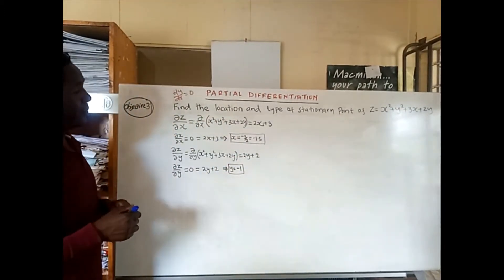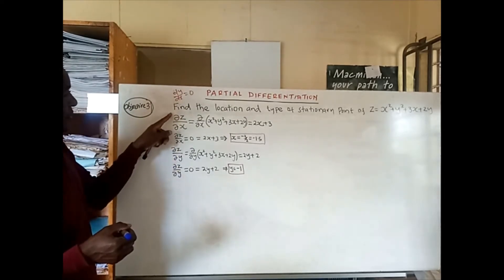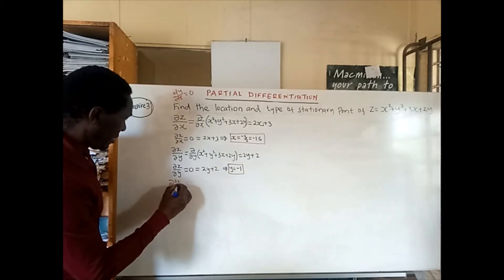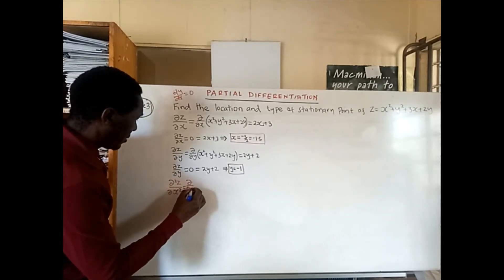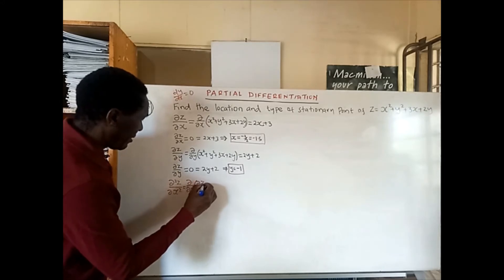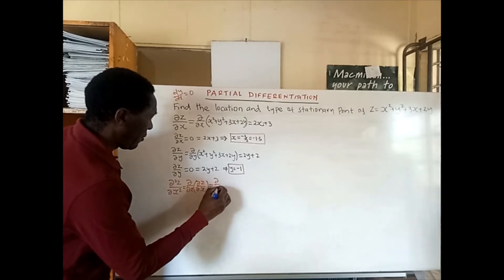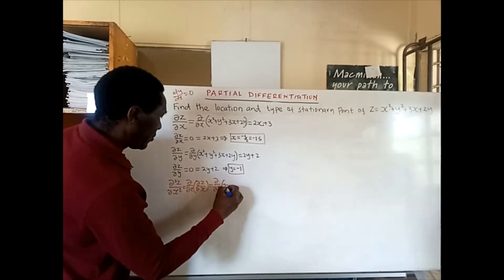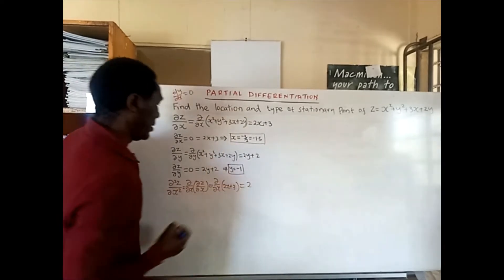Next we get the second partial derivative of z with respect to x. The second partial derivative of z with respect to x is the partial derivative with respect to x of the first partial derivative, which was 2x plus 3. Differentiating 2x plus 3 with respect to x gives us positive 2.